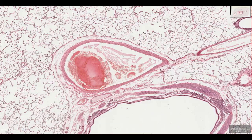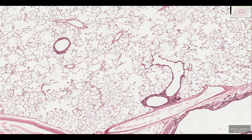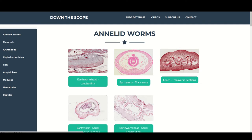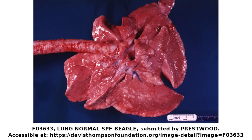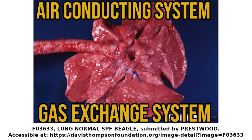Today we're going to have a look at lung histology using a variety of slides. If you want to follow along, there are digital versions of all the slides on the website, and a link can be found in the description. The lung can be broken down into two functional compartments: the air conducting system and the gas exchange system. Let's start off with the air conducting system.